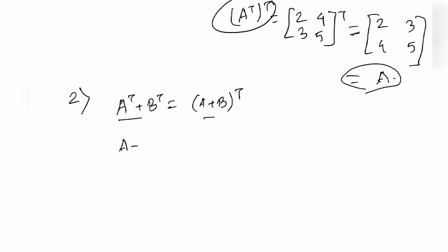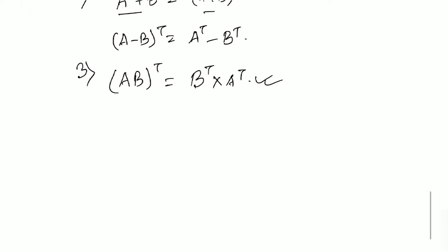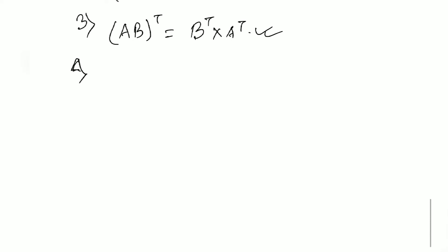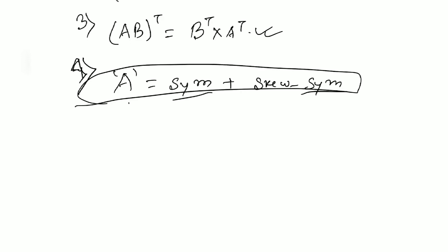The second property of transpose: (A + B)^T = A^T + B^T. Similarly, (A − B)^T = A^T − B^T. The third property is (AB)^T = B^T × A^T — note the order reversal. Later we will see that for inverse the same structure applies: just replace transpose with inverse. The fourth and most important property is that any square matrix A can be expressed as the sum of a symmetric and a skew-symmetric matrix.